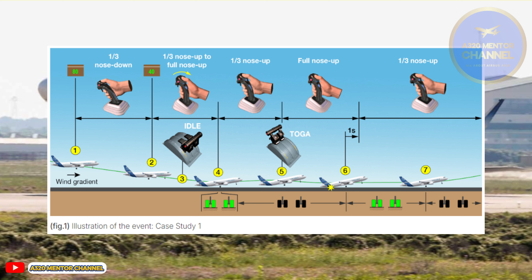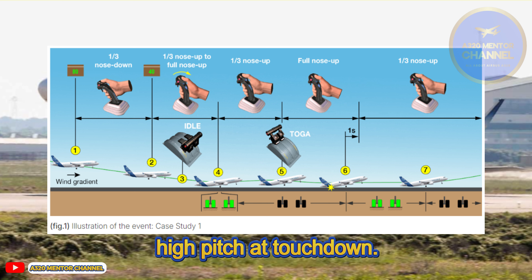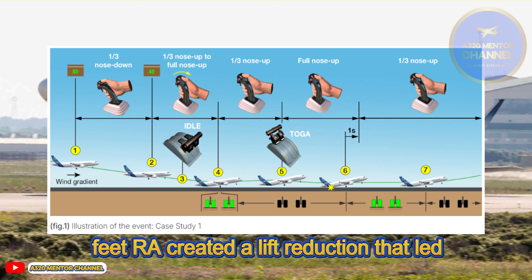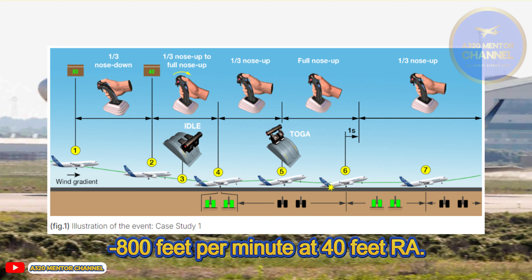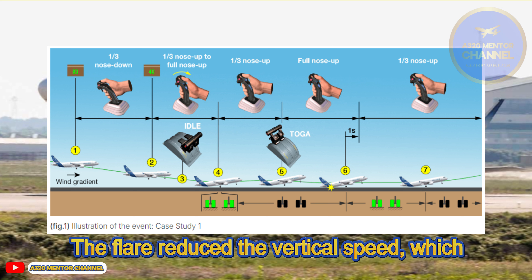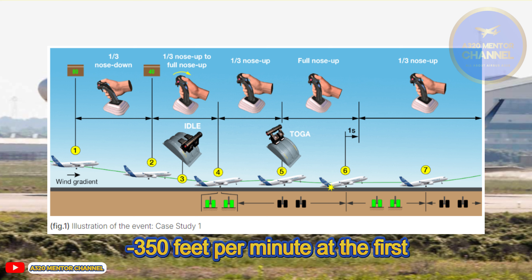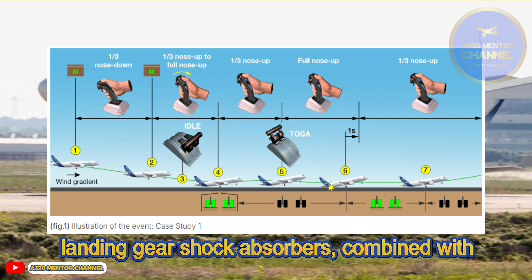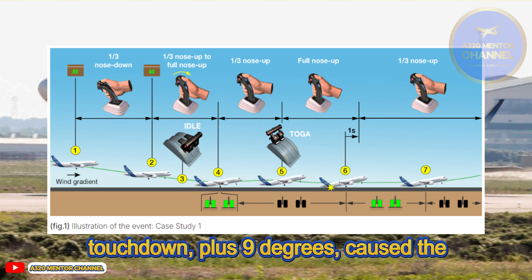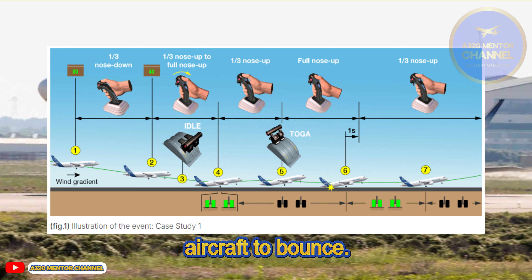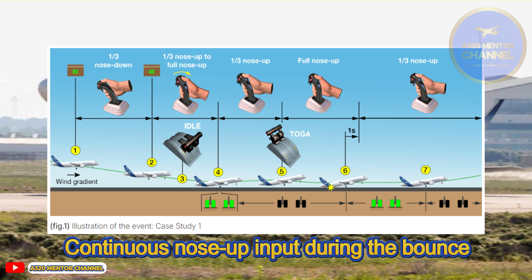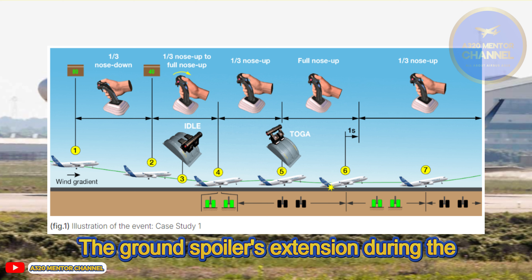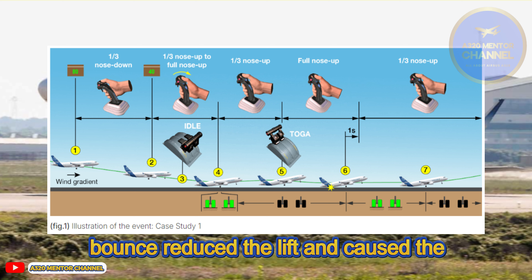Event Analysis – Light bounce due to high vertical speed and high pitch at touchdown. Both the wind gradient and PF input at 80 feet RA created a lift reduction that led the aircraft vertical speed to increase to minus 800 feet per minute at 40 feet RA. The flare reduced the vertical speed, which was still minus 350 feet per minute at the first touchdown. The energy returned through the main landing gear shock absorbers, combined with the lift provided by the high pitch of plus 9 degrees at touchdown, caused the aircraft to bounce. The ground spoilers extension during the bounce reduced lift and caused the second touchdown.